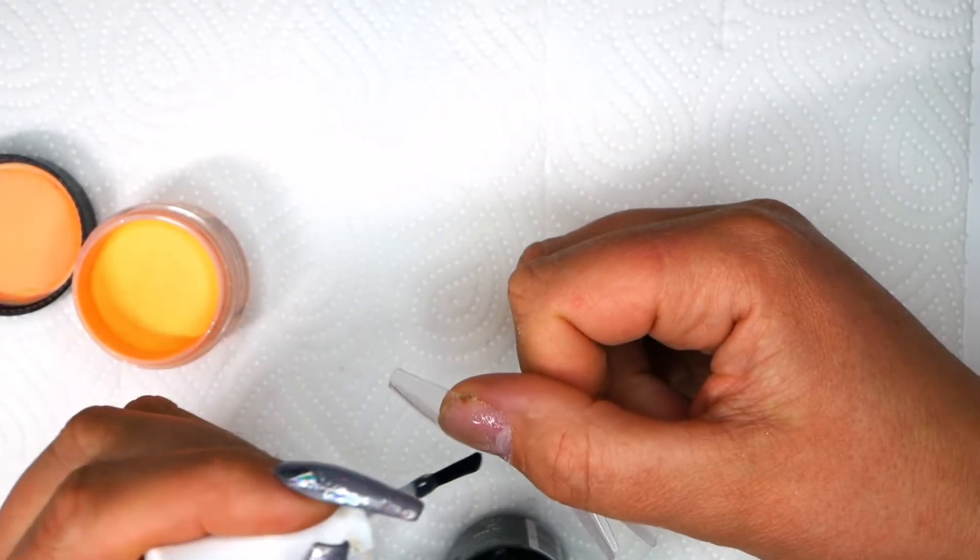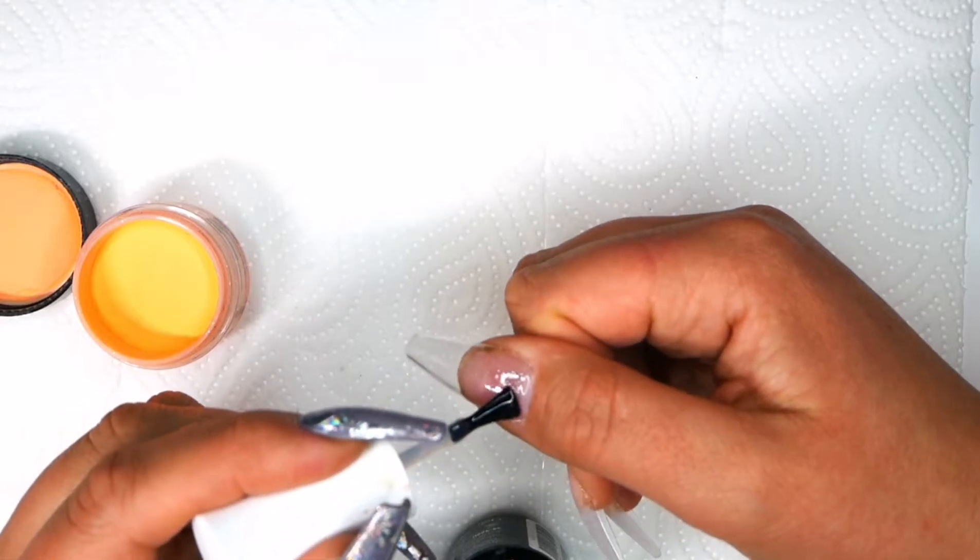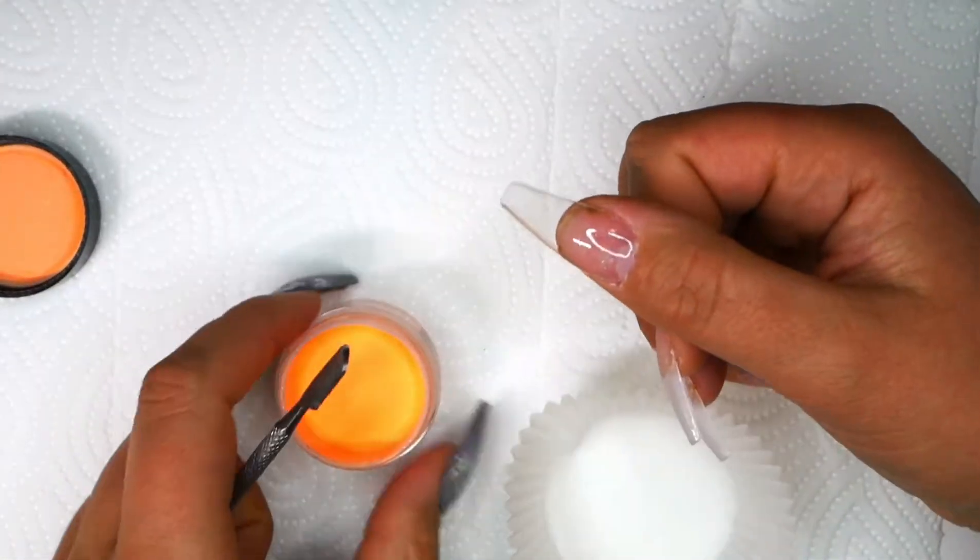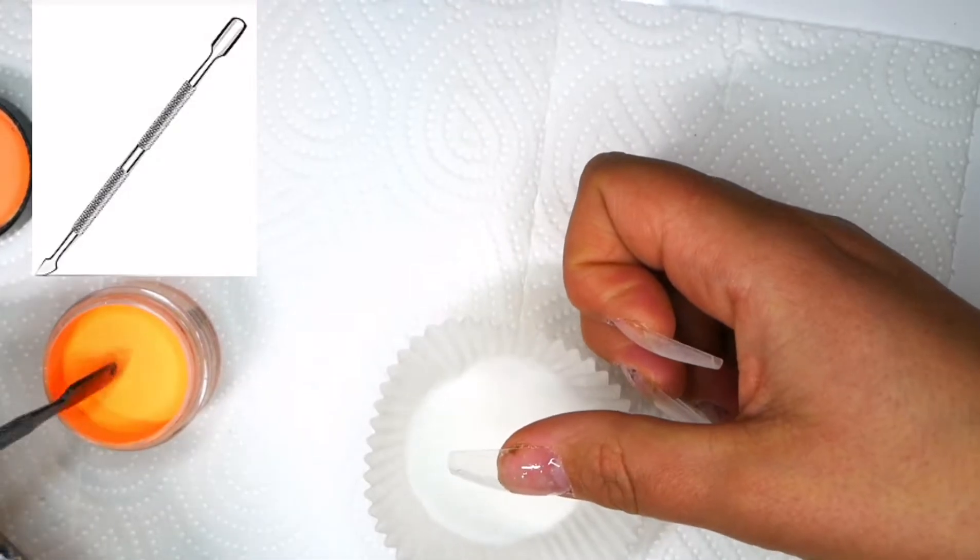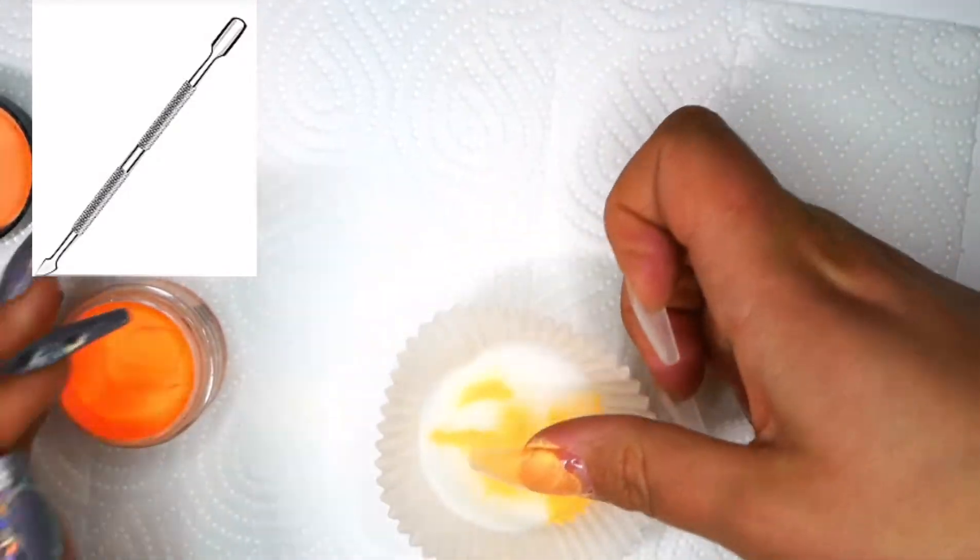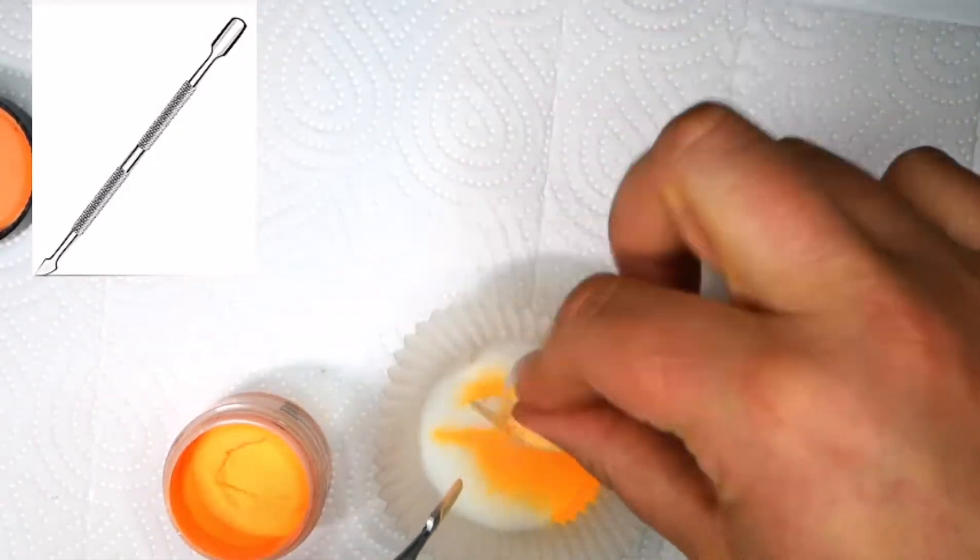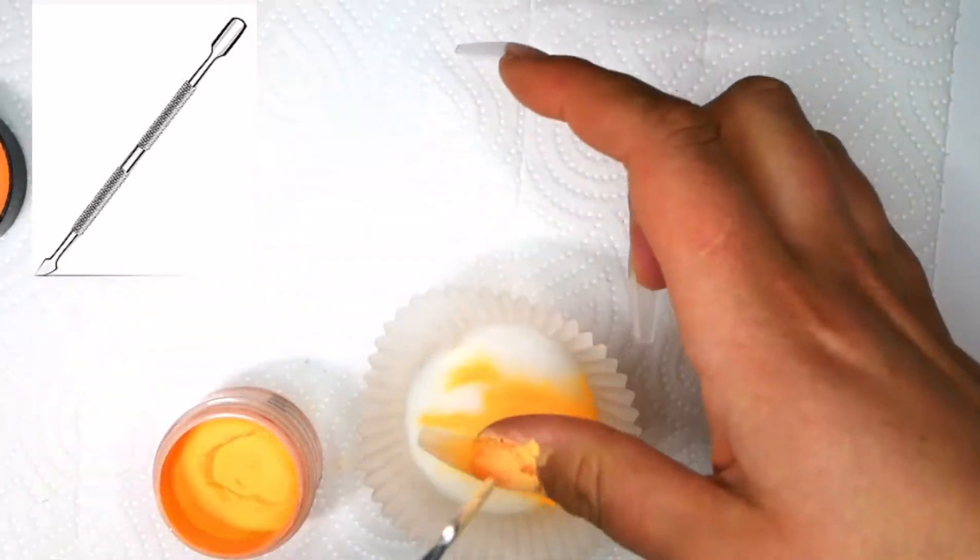So we're just going to do a thin layer of that first. We're not going to cure this and I'm just going to get the cupcake liner underneath so we don't make too much mess and I'll definitely put a paper towel underneath as well so you can just throw everything away afterwards.